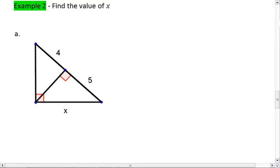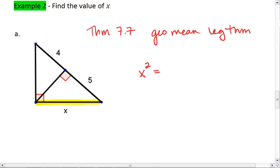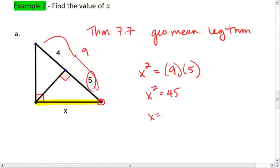So in this one, we see we're working with a leg, meaning we're working with theorem 7.7, which is the leg theorem. We'll actually call it the geometric mean leg theorem. It tells us that the leg, x squared, or x is the geometric mean of the entire hypotenuse times the part of the hypotenuse that's closest to the leg. So where they both meet the same vertex. x squared is going to be 45. x equals the square root of 45.